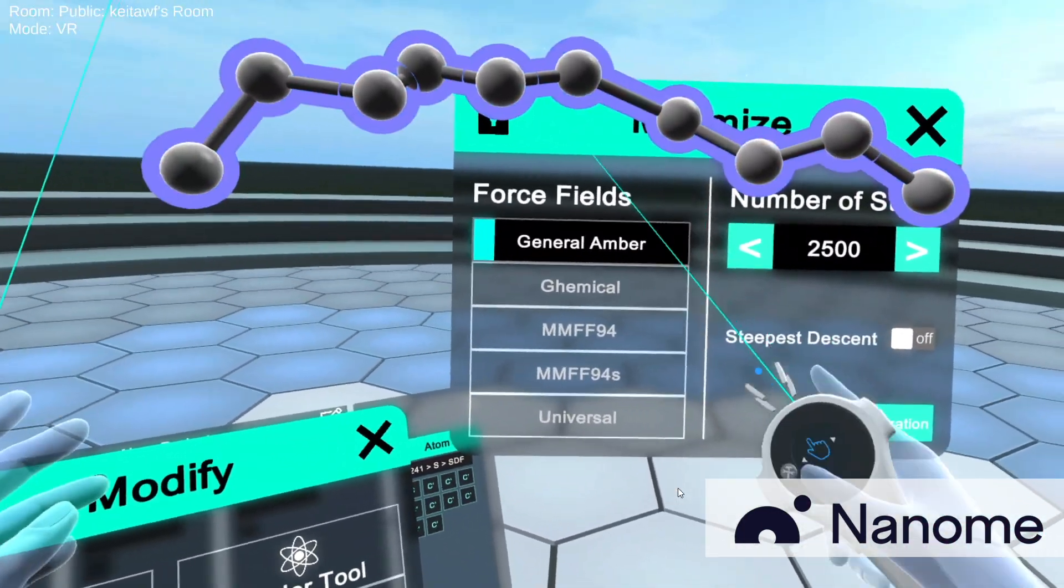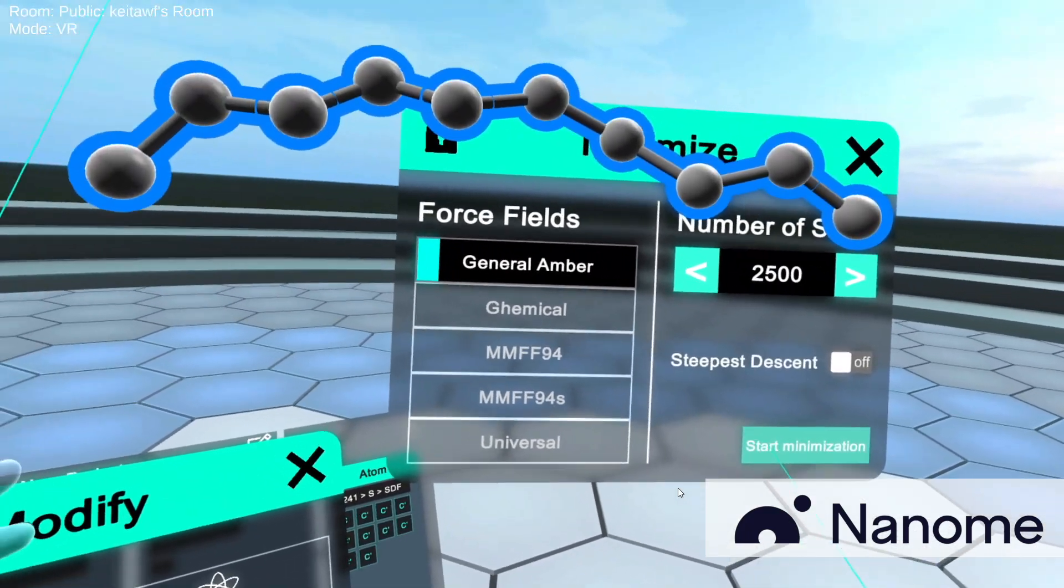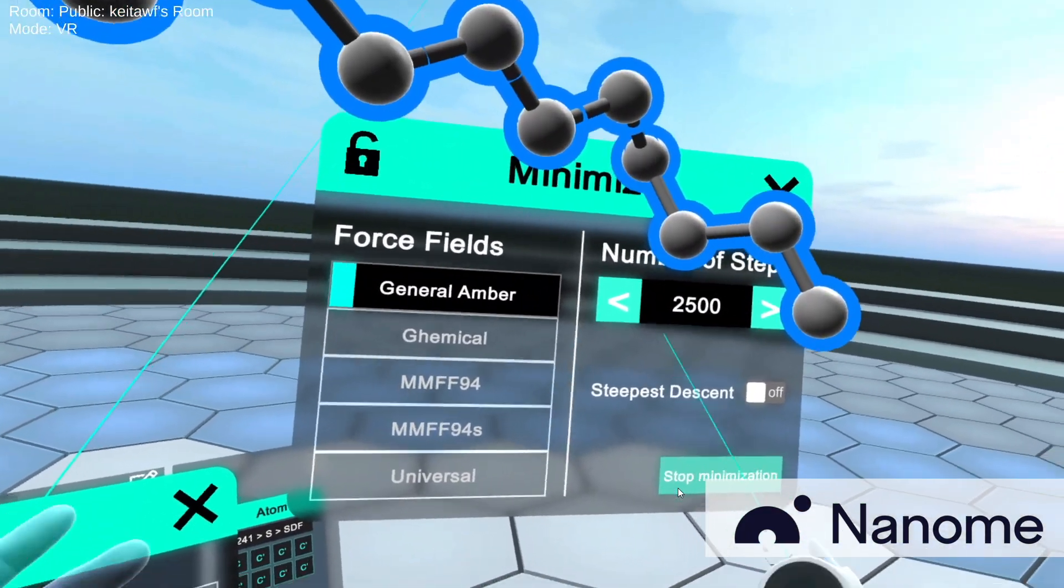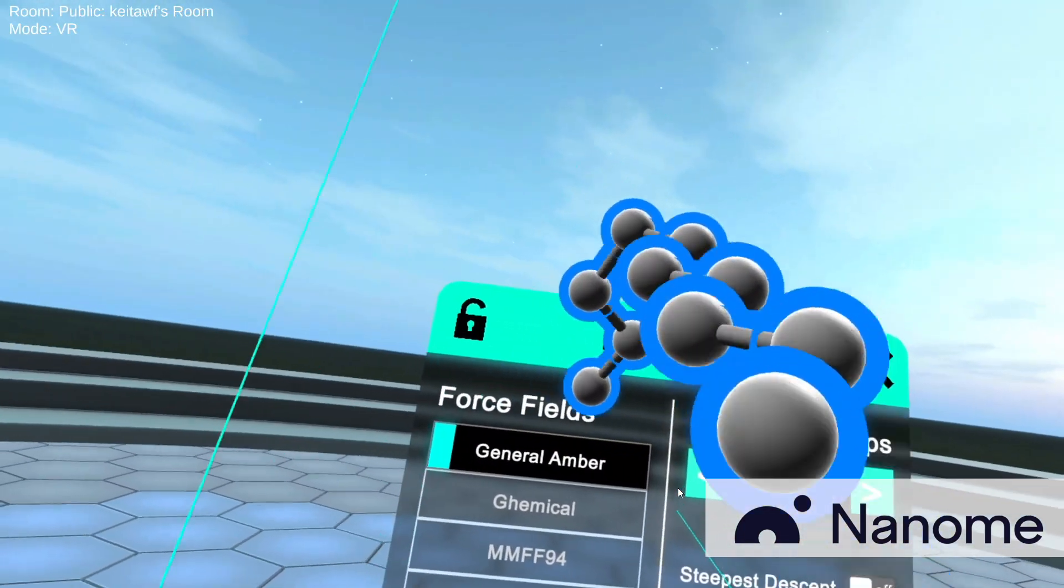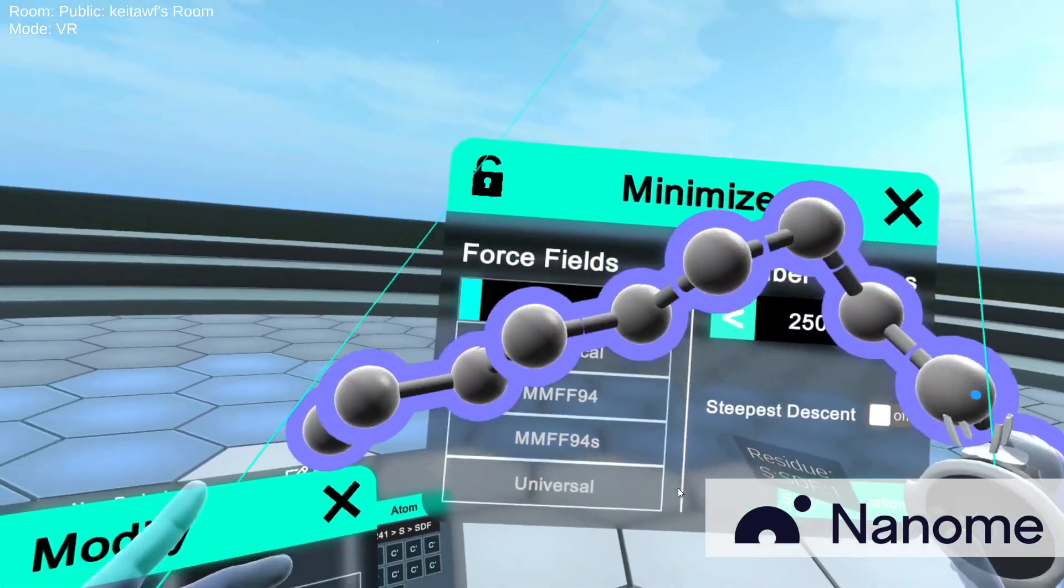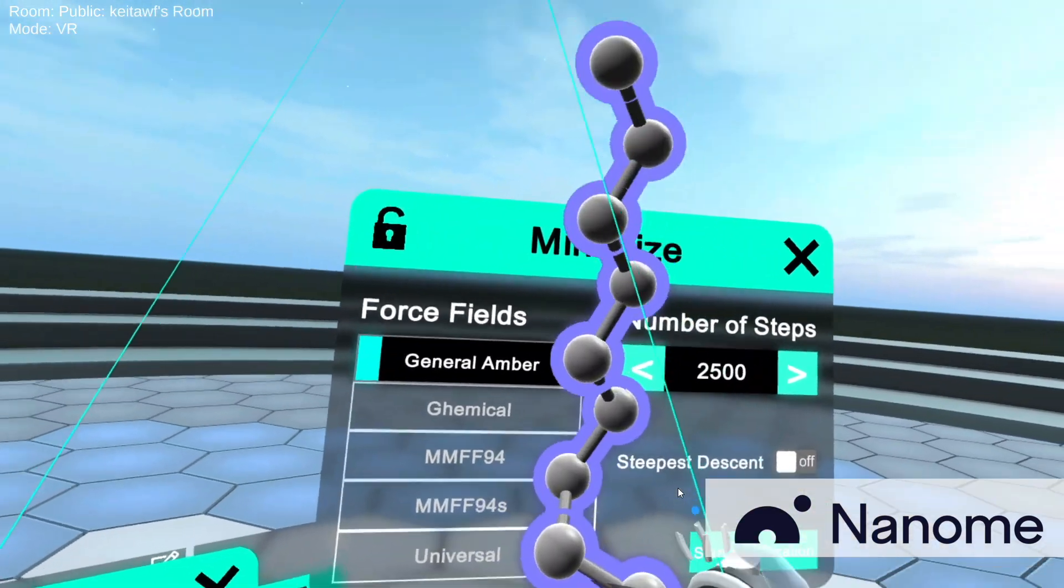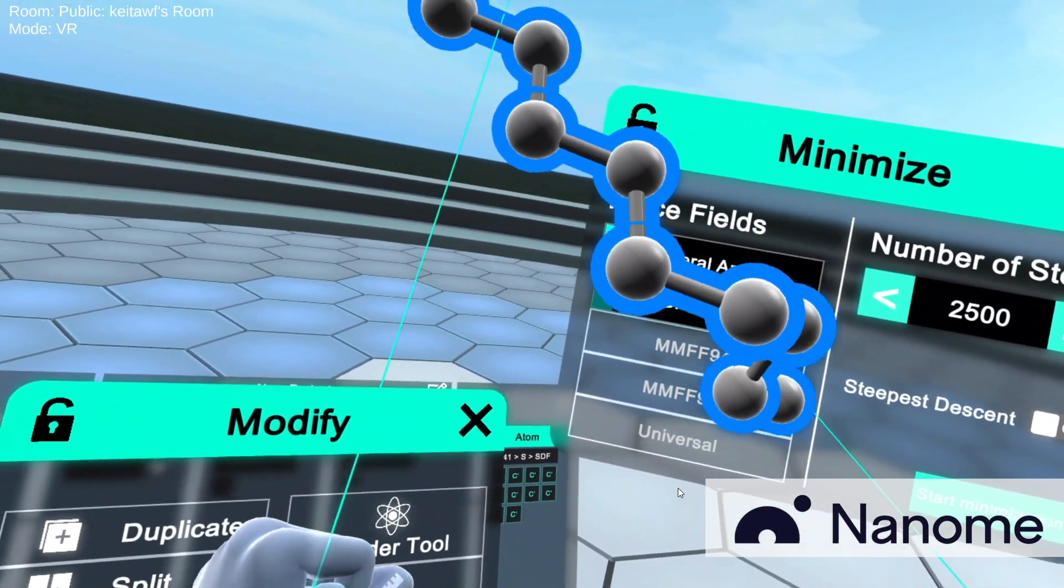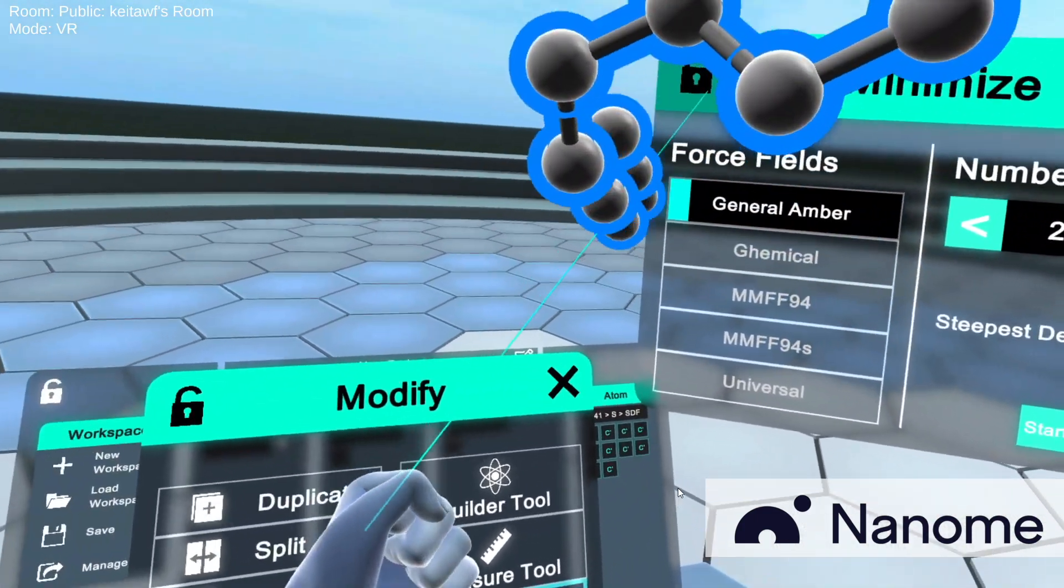So the first time might not be enough steps, so you might want to click it again. And you see how the more we click on it, the more steps it goes through, and the more the carbon chain actually minimizes to its local energy minimum state, or really it's the minimum energy state of whatever molecules and structures that you have selected.